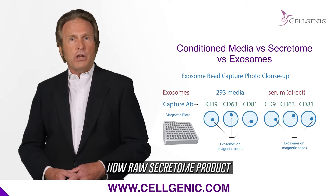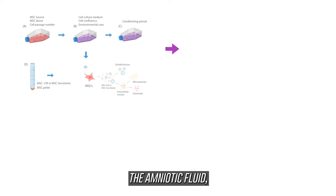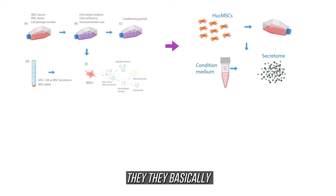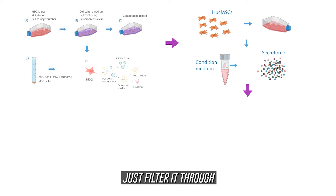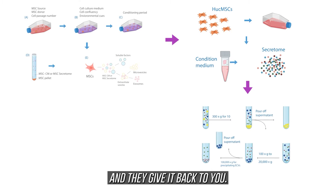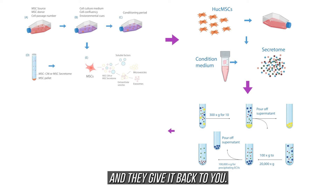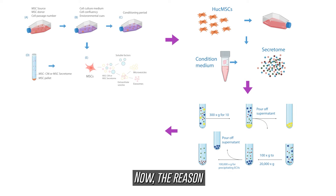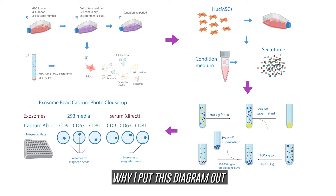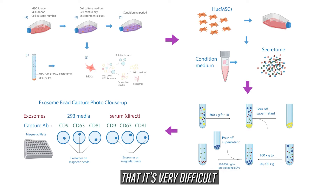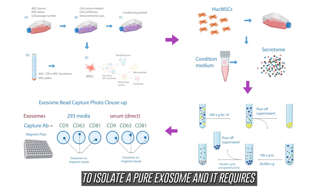A raw secretome product is when someone takes the amniotic fluid, basically just filters it through, and gives it back to you. The reason I put this diagram out there is so you clearly understand that it's very difficult to isolate a pure exosome.